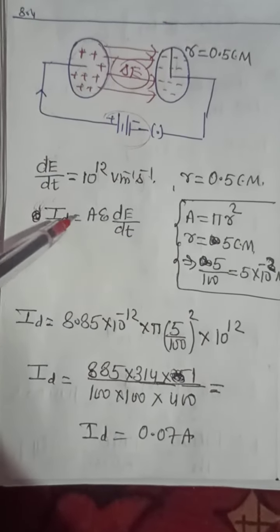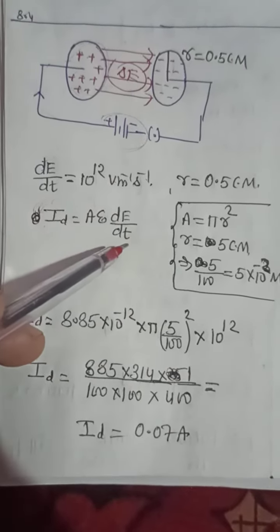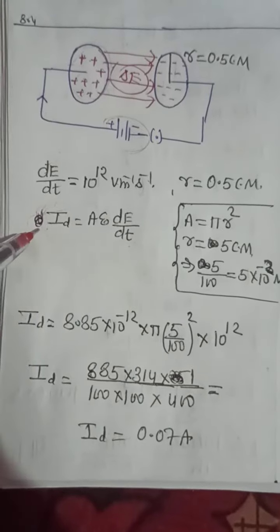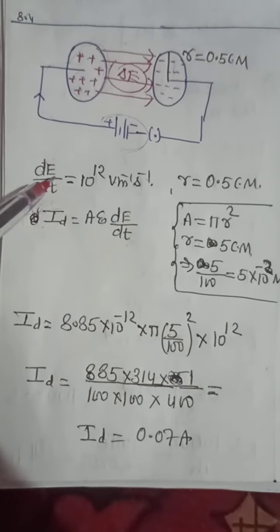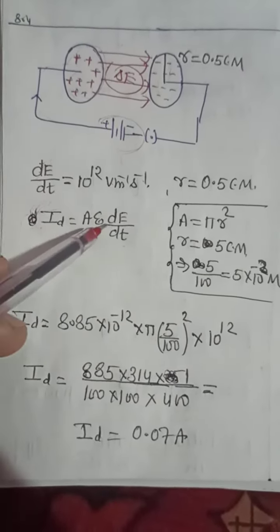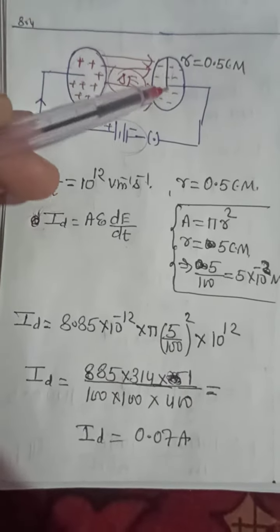And displacement current formula is epsilon naught, area, dE by dt. We have to apply this formula. dE by dt is given. Epsilon naught and area, the formula, because R is given.